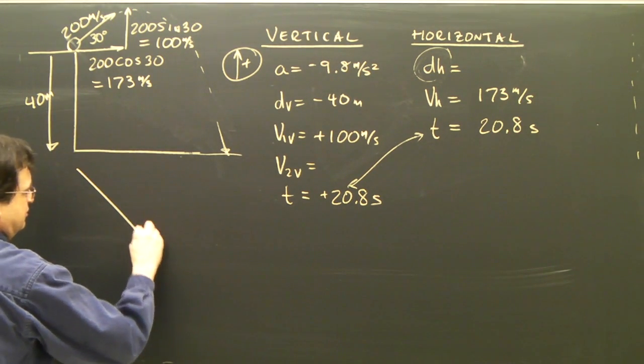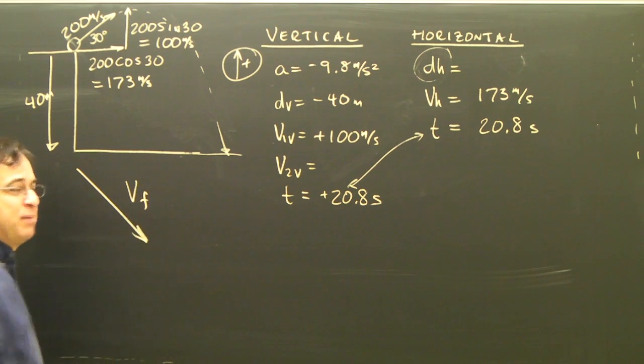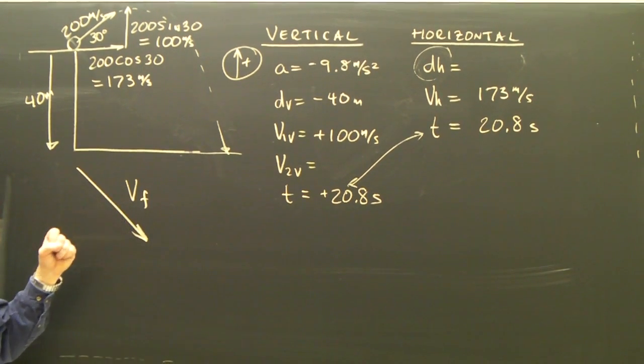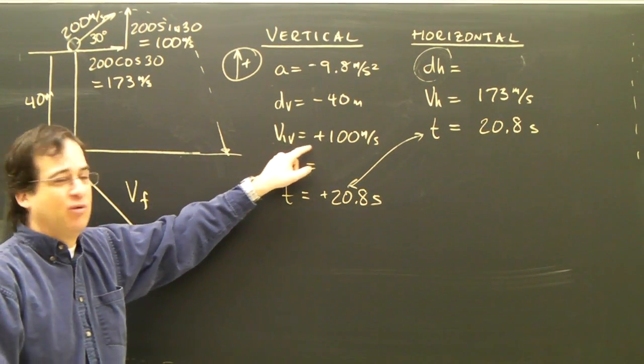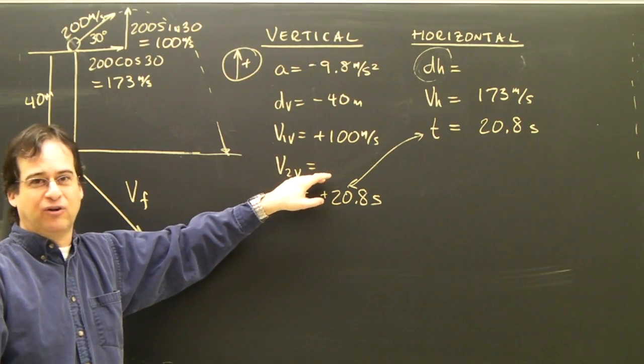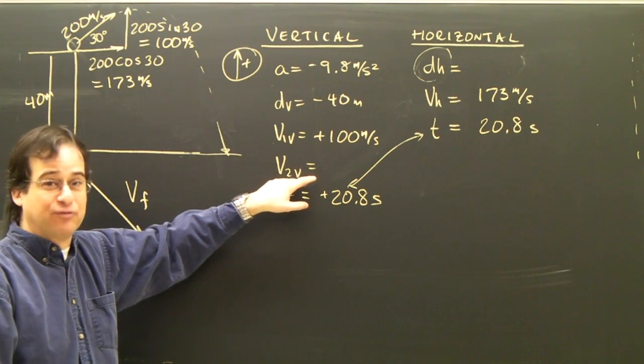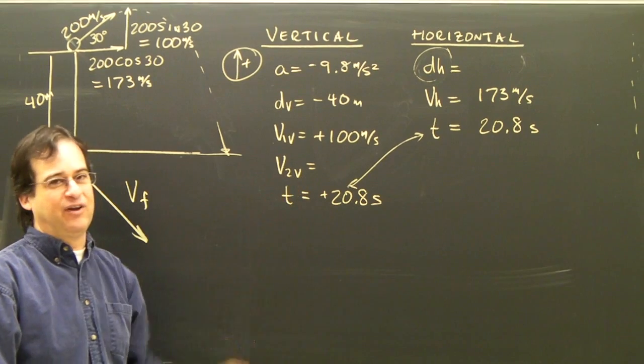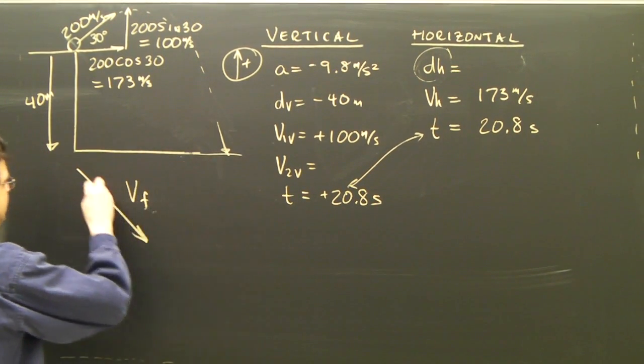So this is the impact velocity. I'm just going to label it final so I don't get confused with v2 vertical. This is the final vertical component, but it is not the final velocity. So here's my final velocity.